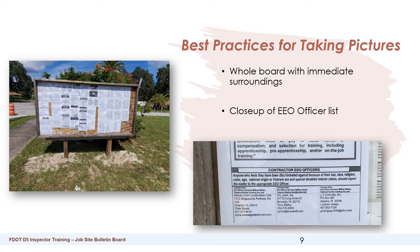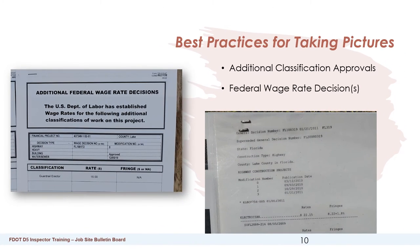Best practices for taking pictures: to ensure the accessibility and accuracy of information on the jobsite bulletin board, proper pictures need to be taken. Whole board pictures with immediate surroundings help the RCS verify the accessibility of the board. Close-up pictures of the EEO officer list help the RCS verify that the information listed is correct and accurate. Close-up pictures of additional federal wage rate decisions, if applicable, and the wage rate posters are also needed to verify the correct ones are posted.